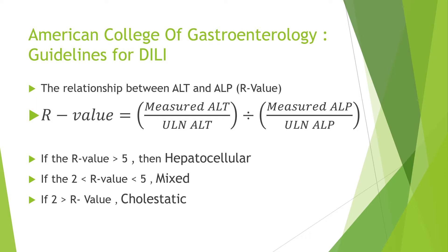That relationship is represented by the R-value. It is equal to the measured ALT from our patient divided by the upper limit of normal of the ALT, and then that number is divided by the measured ALP over the upper limit of ALP. If the R-value is greater than 5, there is a high probability the liver injury is more hepatocellular. If the R-value is between 2 and 5, it indicates a mixture of cholestatic and hepatocellular. If the R-value is less than 2, the damage is more cholestatic, and there may be obstruction or damage in the biliary tree.